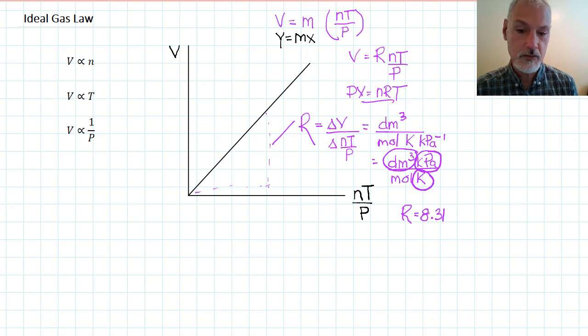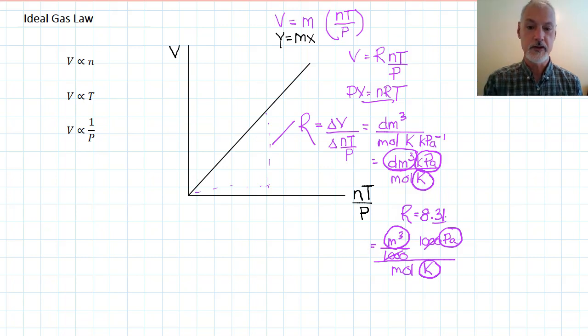Now, that's not the only set of units we can use here to use this 8.31. Consider the following. A decimeter cubed is the same as a cubic meter divided by a thousand. A kilopascal is the same as a thousand pascals. On the bottom, I would still have units of moles and kelvin. Now, in this case, the thousands will cancel. So, this is another combination of units that's possible to be using when you're calculating 8.31.